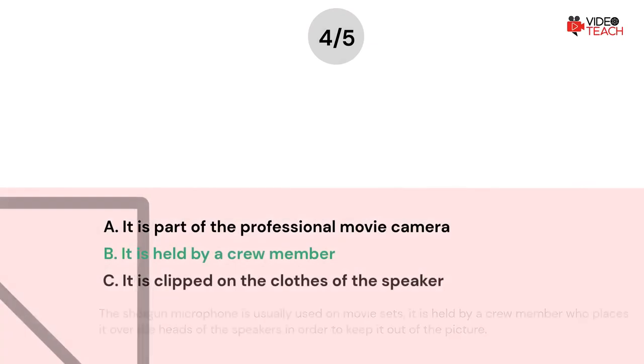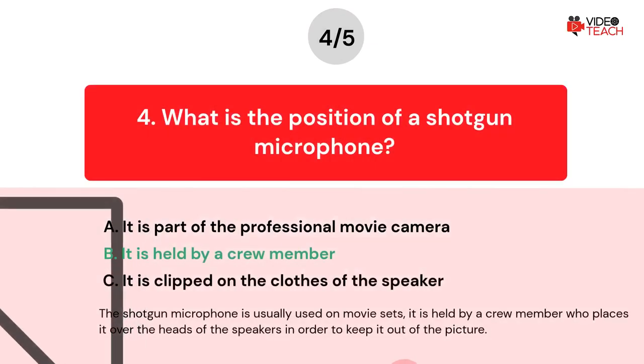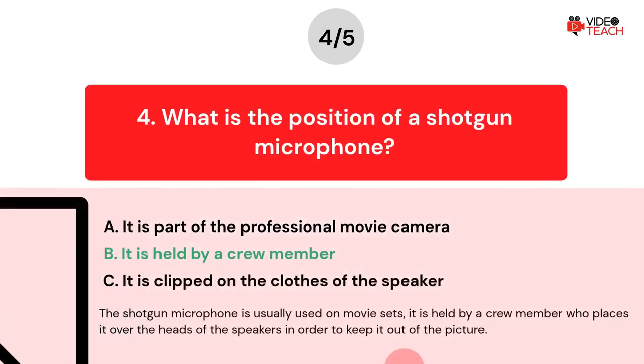The correct answer is B. The shotgun microphone is usually used on movie sets. It is held by a crew member who places it over the heads of the speakers in order to keep it out of the picture.